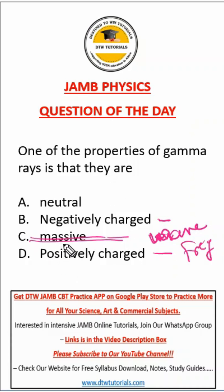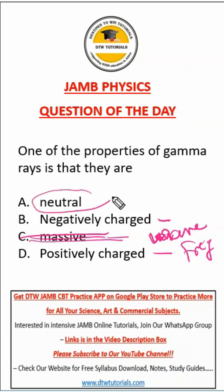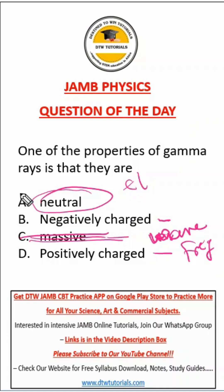Also their charge. So 'massive' is absolutely off. For gamma rays, one of the properties is that it is neutral — electrically neutral — so it cannot be deflected by electric fields or magnetic fields. Our answer here is A.